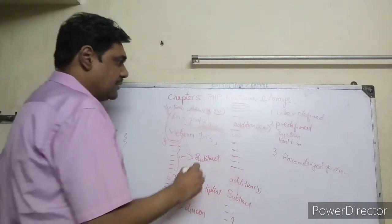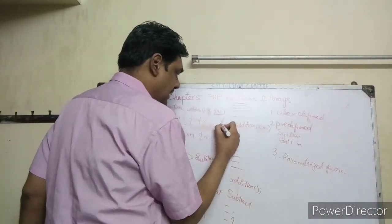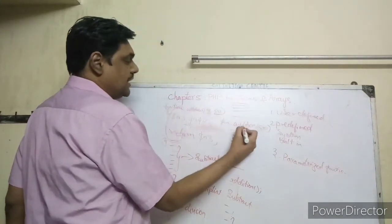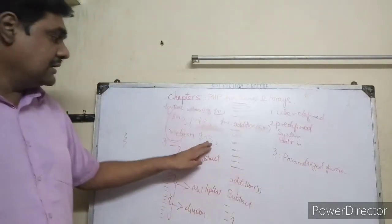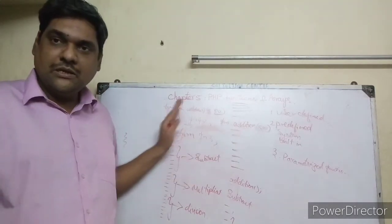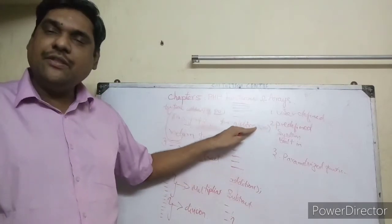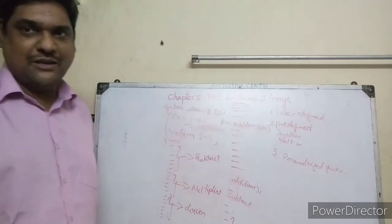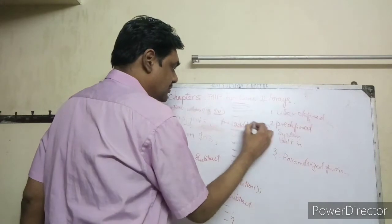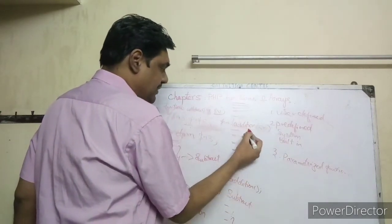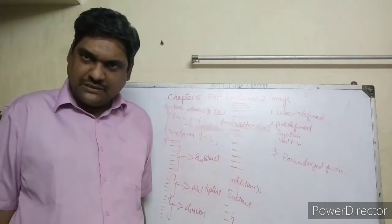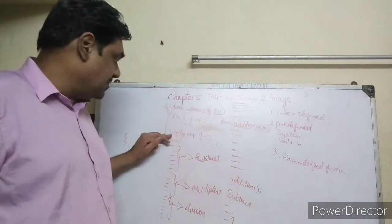In the function call, you store the returned value: dollar ans equals addition(5, 10). Since n3 has 15, the value 15 is returned and stored in dollar ans. So dollar ans now holds 15.